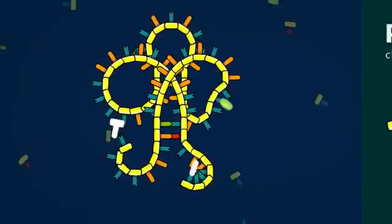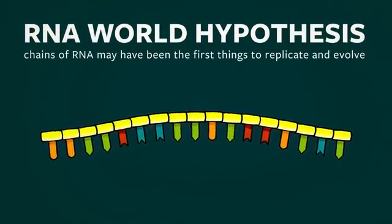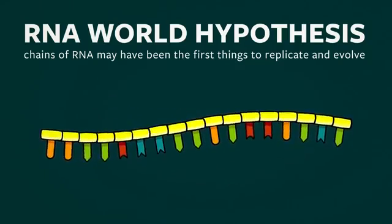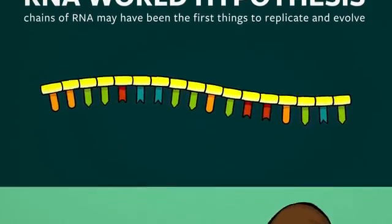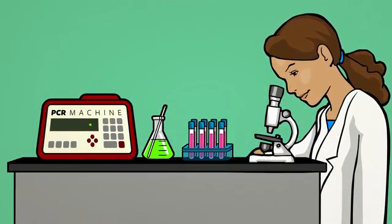So to sum things up, the RNA world hypothesis is the simple idea that the first things to replicate and evolve on our planet may have been chains of RNA or something similar to them. While the basic idea of the RNA world does seem to give us a promising pathway to the origin of life, it's still very much a work in progress.